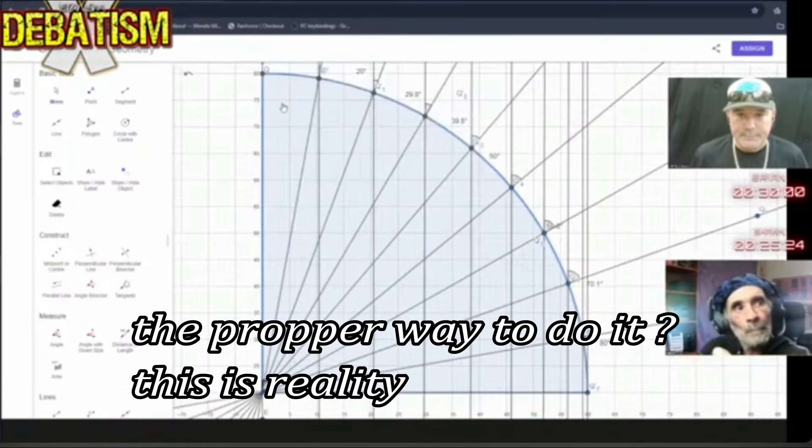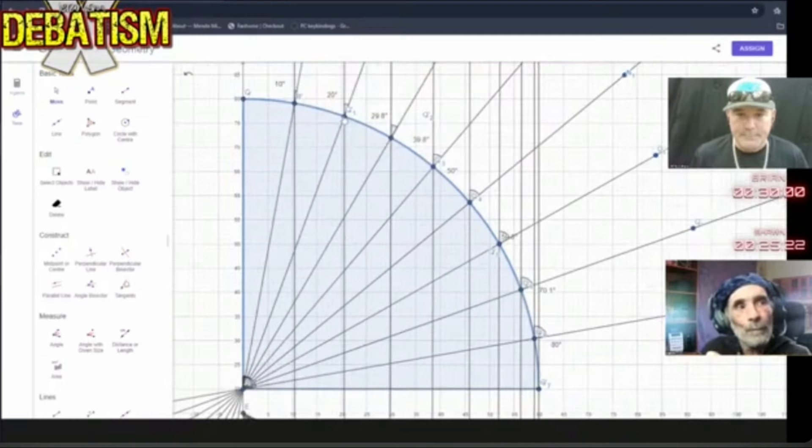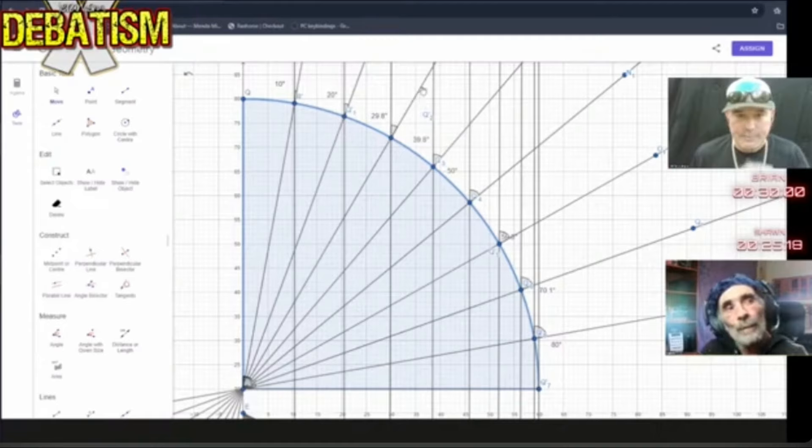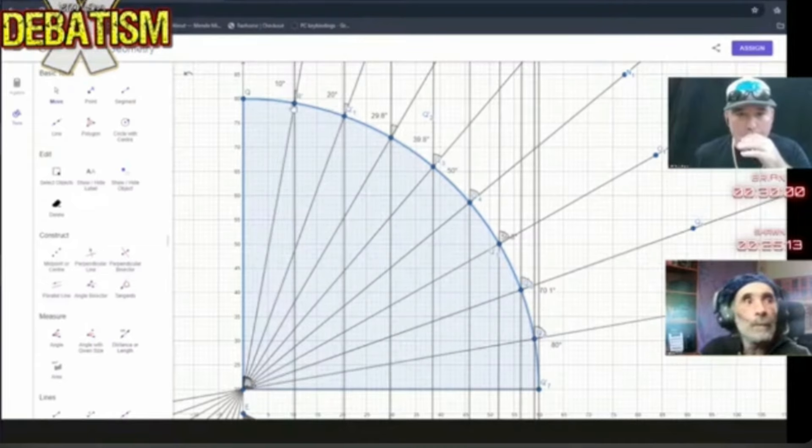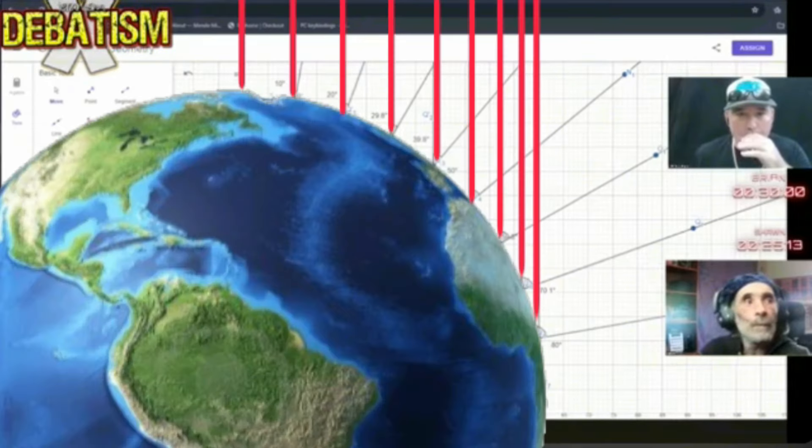No, that's not what the data say, Sean. Now the proper way to do it is like this. This is reality. Every one of these people, these radiating lines from the center, are perpendicular to the Earth at their respective points, but the lines to Polaris, let me make it a little bit more clear.